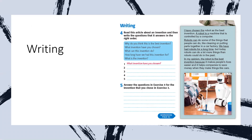And then we have the writing part. The writing part, as we said, speaks about the advantages and disadvantages of technology. Here the text says: I have chosen the robot as the best invention. A robot is a machine that is controlled by a computer. Robots can do some of the things that people can do, like cleaning or putting parts together in a car factory. In my opinion, the robot is the best invention because it makes people's lives easier and it helps companies save money.